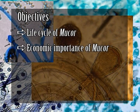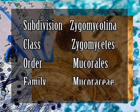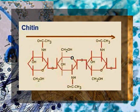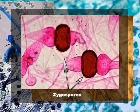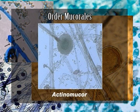Mucor, also called black mold or pin mold, belongs to the subdivision Zygomycotina, class Zygomycetes, order Mucorales, and family Mucoraceae. The fungi included in Zygomycotina are mostly terrestrial and reproduce asexually by non-motile spores. Their thallus is usually mycelial, aseptate, and the cell wall contains chitin and chitosan. They are normally haploid. The principal characteristic that distinguishes class Zygomycetes is the production of a thick-walled resting spore called zygospore.